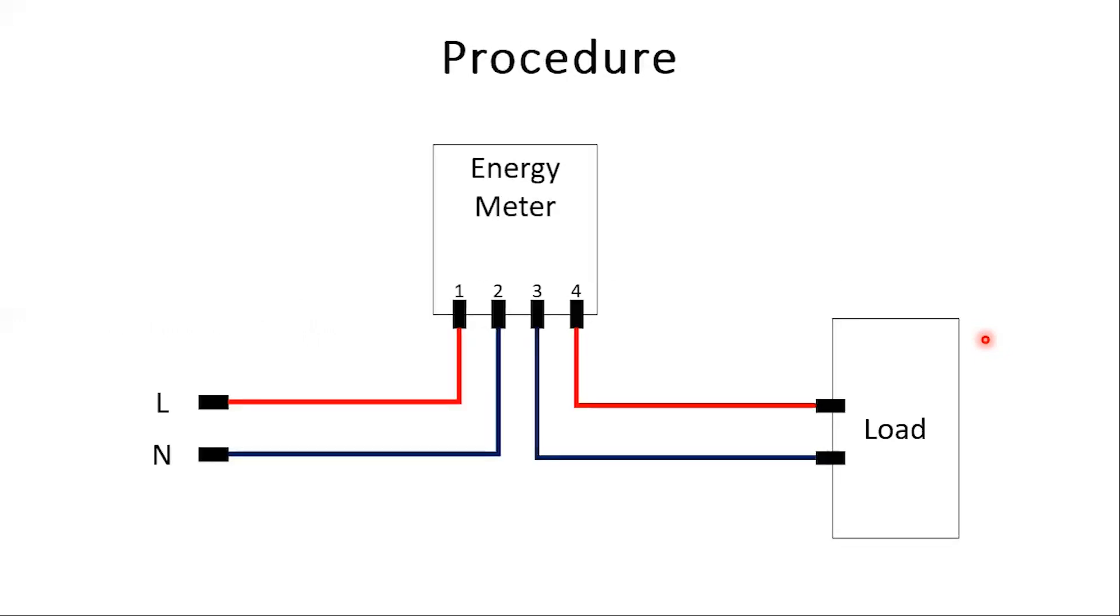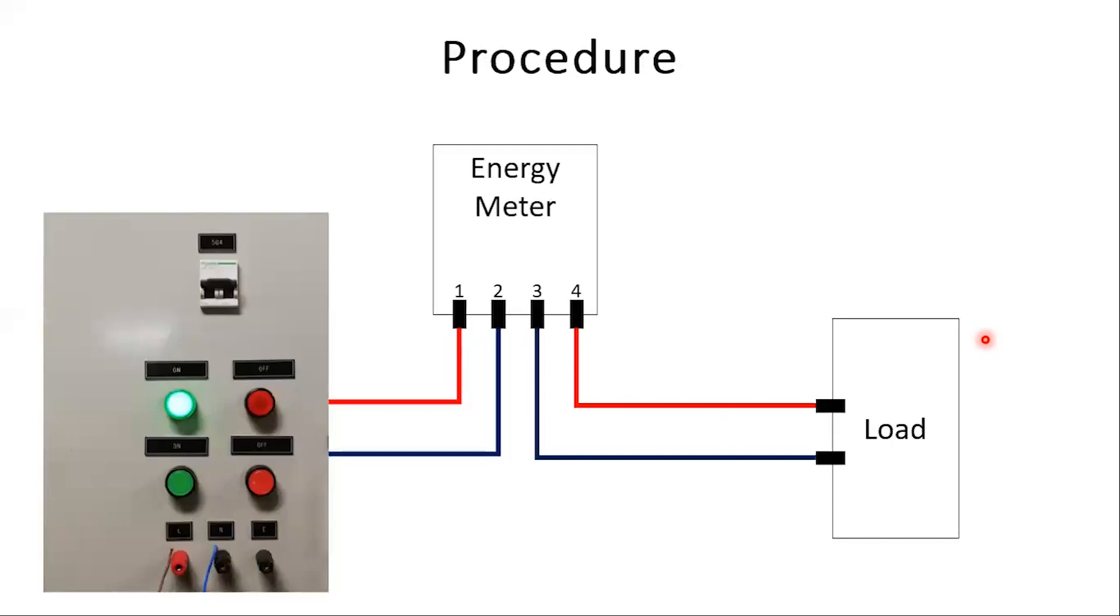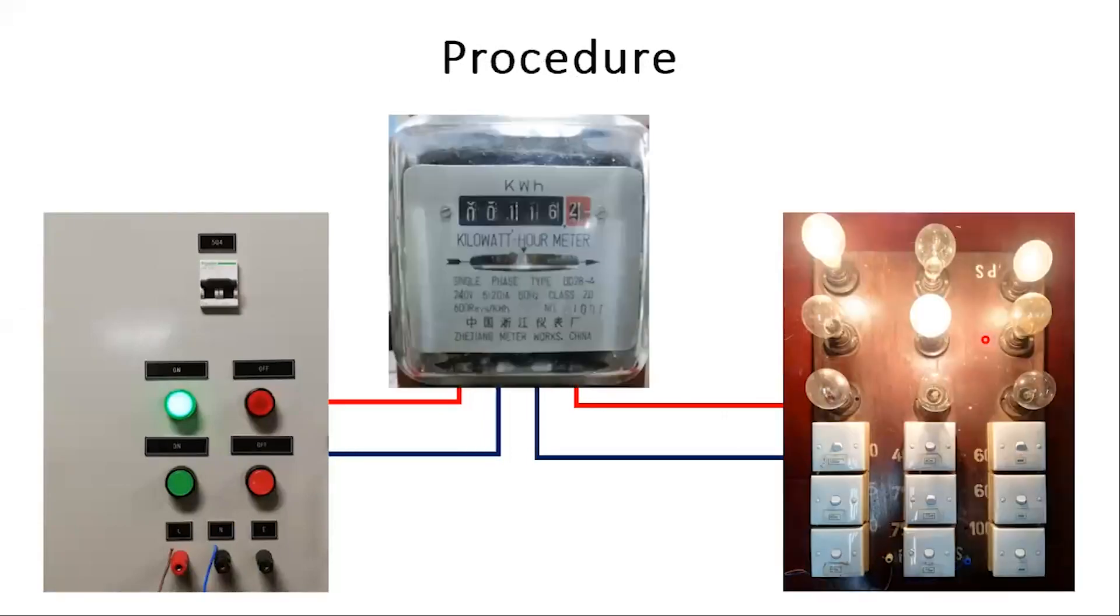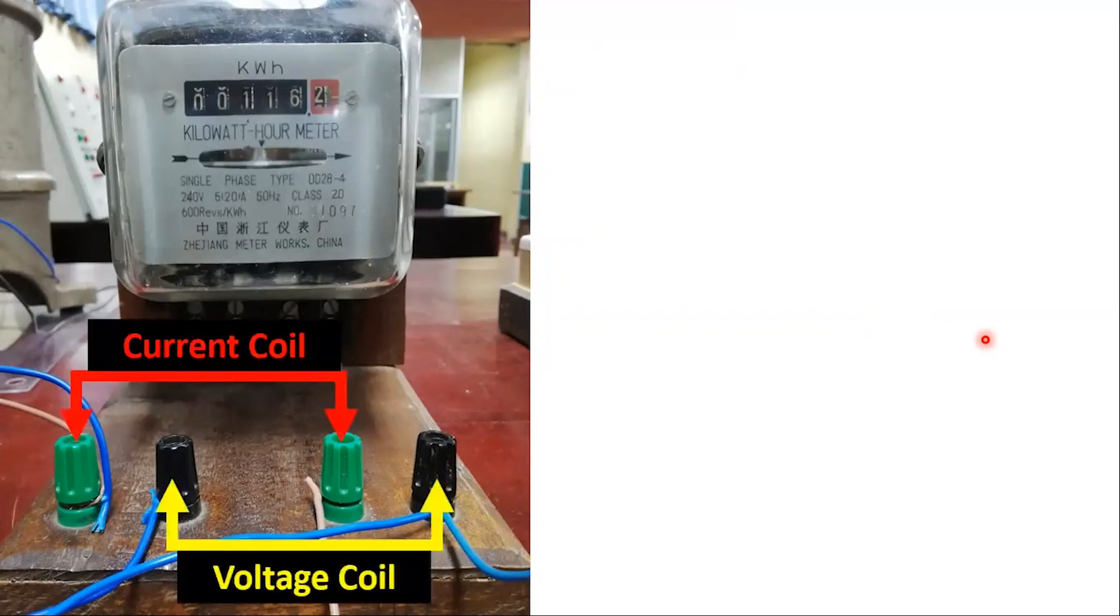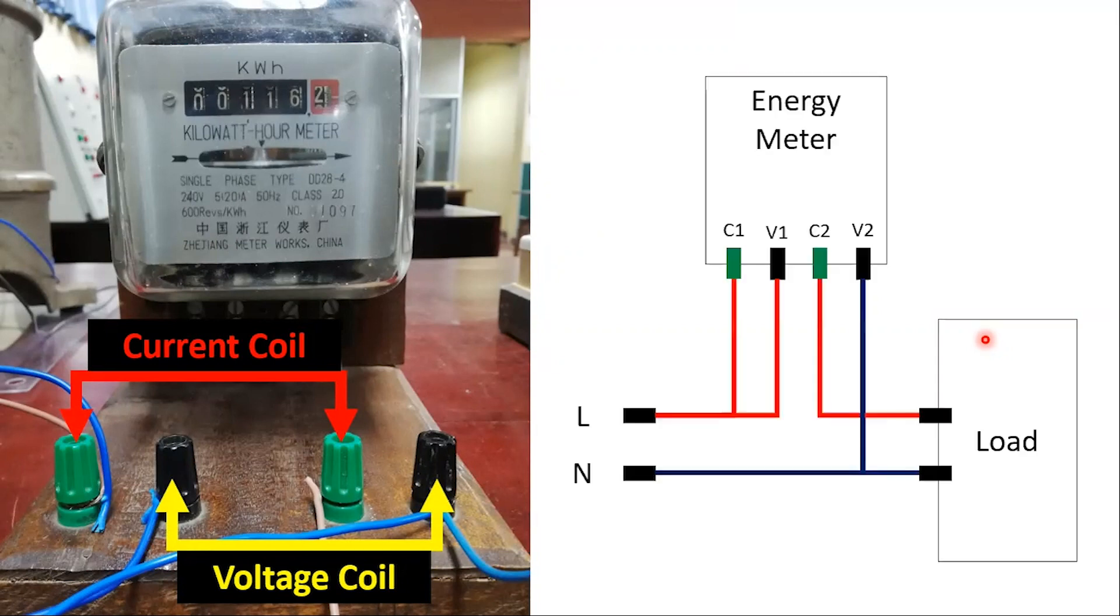Moving on to the procedure, as mentioned before it is a simple setup where we have a single phase supply, the load, and an energy meter. Usually connecting an energy meter is straightforward, but in the meter we use, the terminals are rewired to access the current coil and the voltage coil directly. Hence we must go by the first principles and connect it such that the current coil is in series with the load and the voltage coil is in parallel with the load.